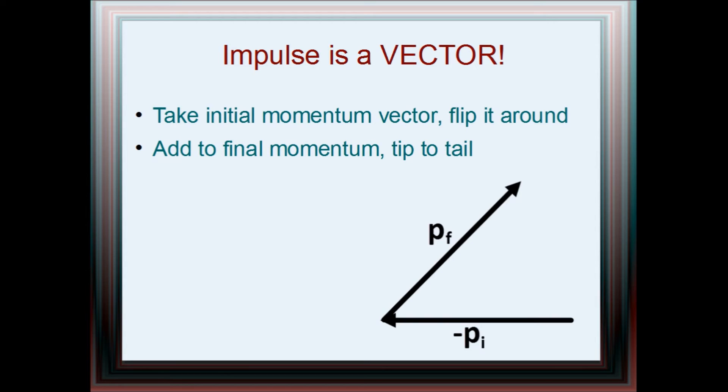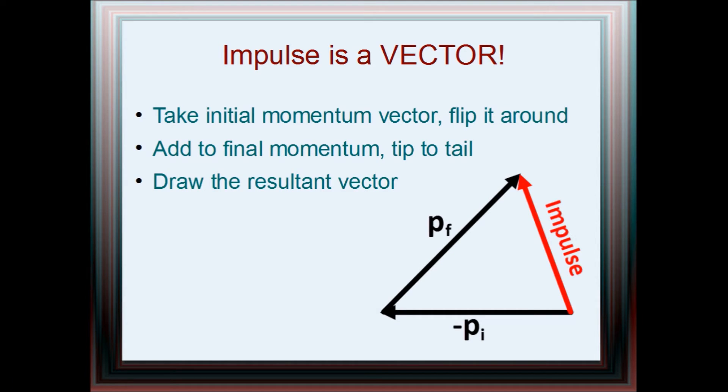Then add it to the final momentum. You put the arrows together like this, with the tip of one on the tail end of the other. Finally, you draw the resultant like this, and that's your change in momentum. Just remember, impulse still has units. It's measured in newton seconds or kilogram meters per second.